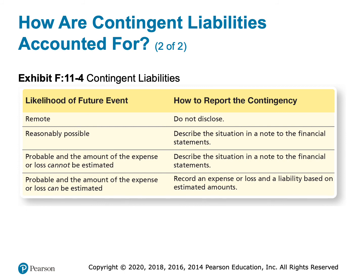Just disclose it. This way we can say we're not trying to hide anything — we've told you about it, especially in this day and age with information. There's no point in not disclosing it, because with open records, anybody can find out that you've been sued. If it's probable that we're going to lose and we cannot estimate the amount, then you could just describe it. But I think it's always possible to estimate the amount. So if it's probable that you're going to lose and you can somehow estimate the amount, we need to go ahead and record that expense and that liability.